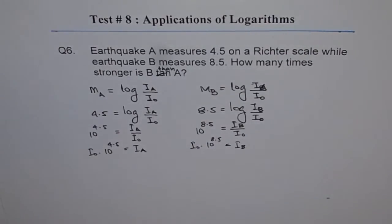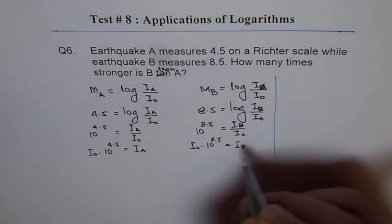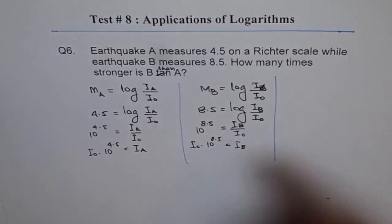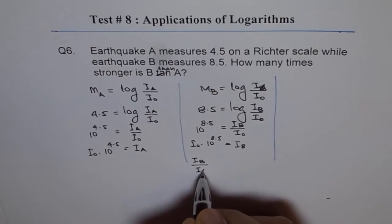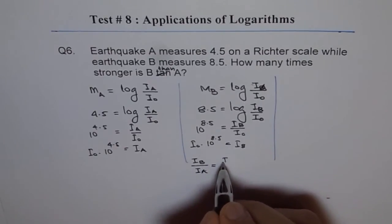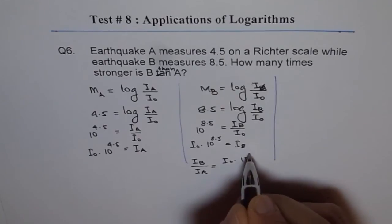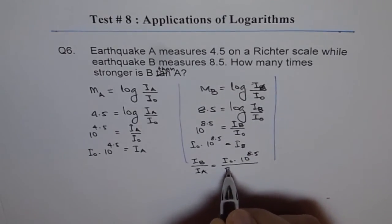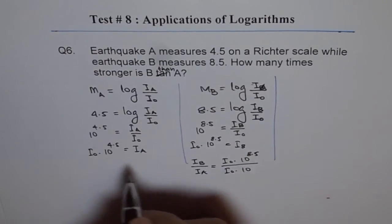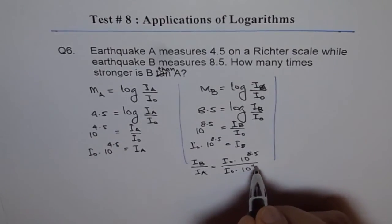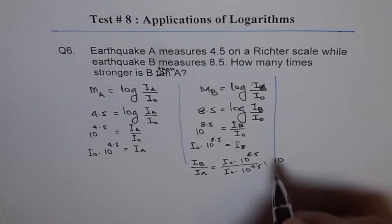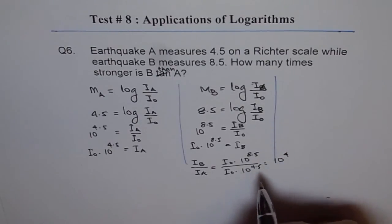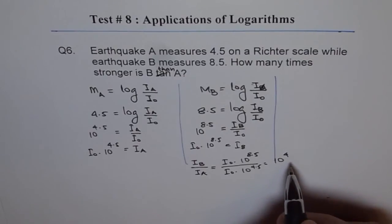Now, the ratio of I B over I A is equals to I0 times 10 to the power of 8.5 over I0 times 10 to the power of 4.5, which is 10 to the power of 8.5 minus 4.5. Which is 4. So, the ratio is 10,000 times.